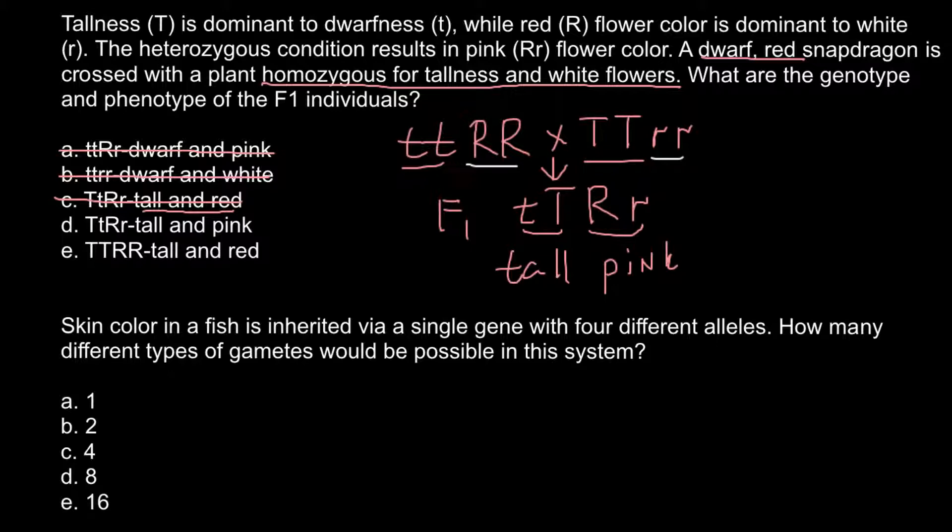Answer D has the same genotype as we have here, capital T small t and capital R small r, and phenotype is tall and pink. This would be our answer. We also can cross out answer E because this is different genotype and phenotype. Now we can move to the second question.